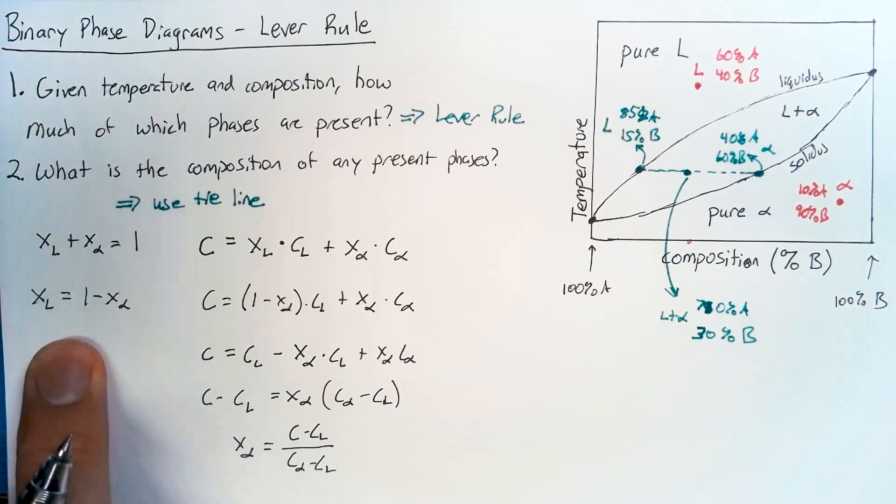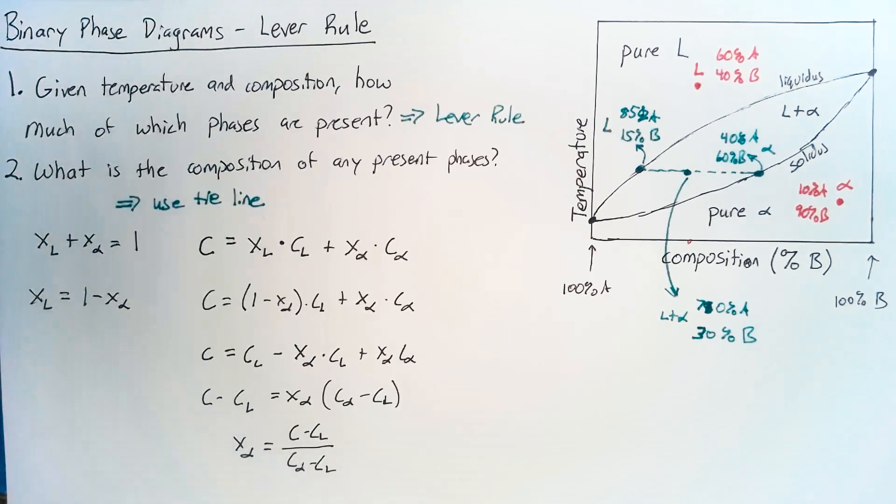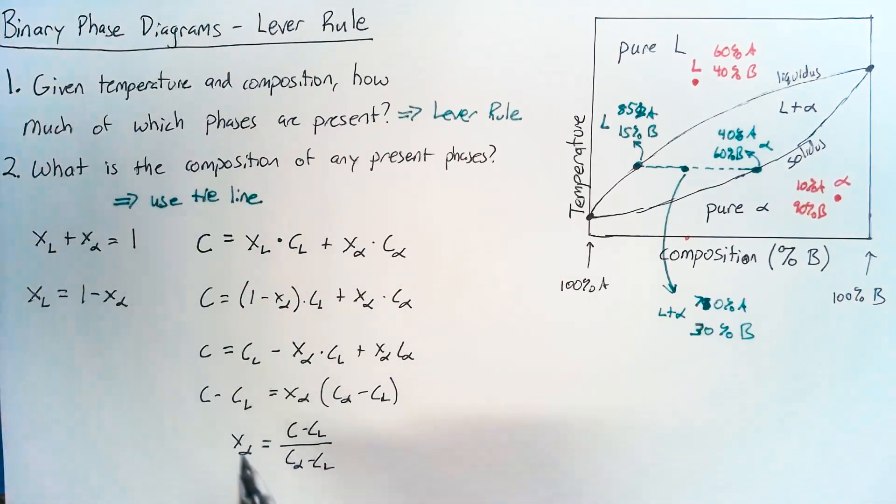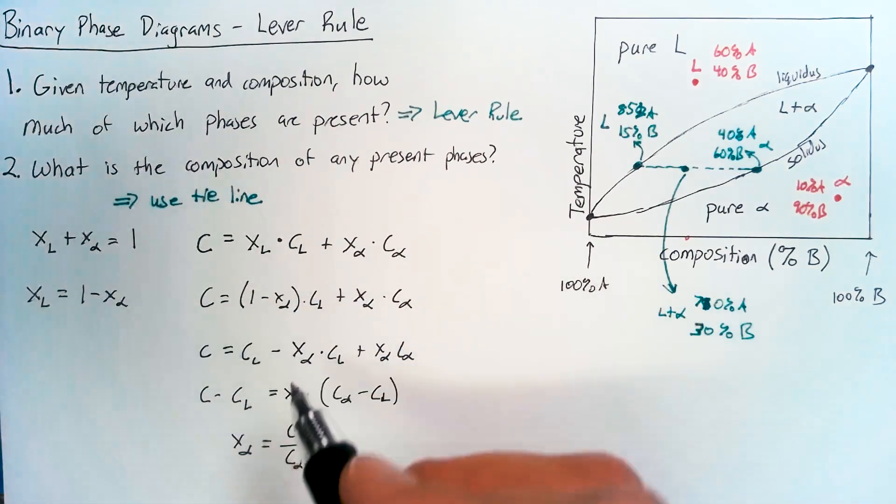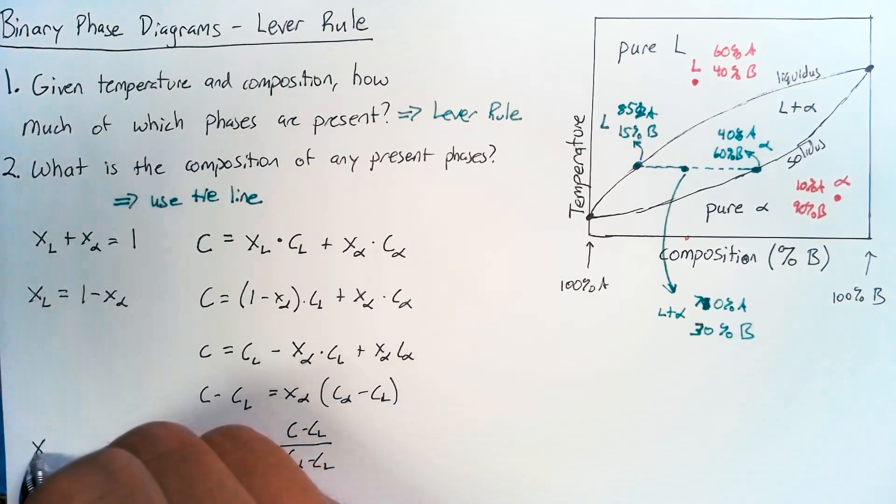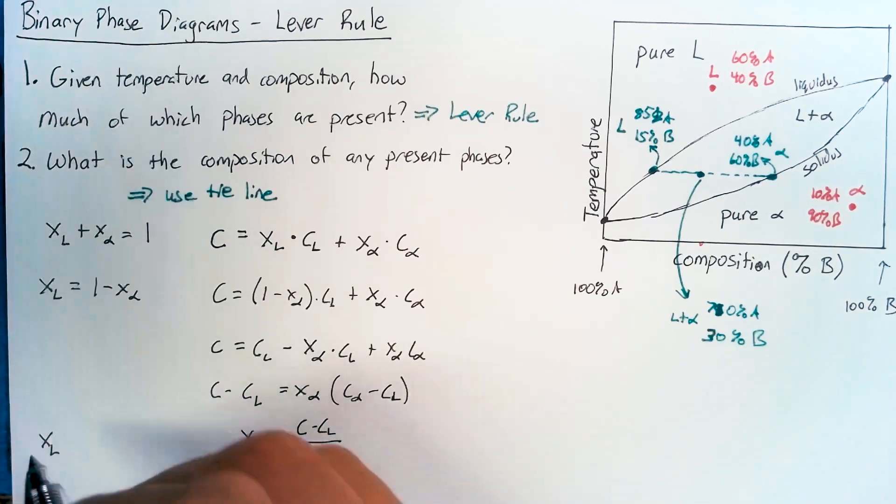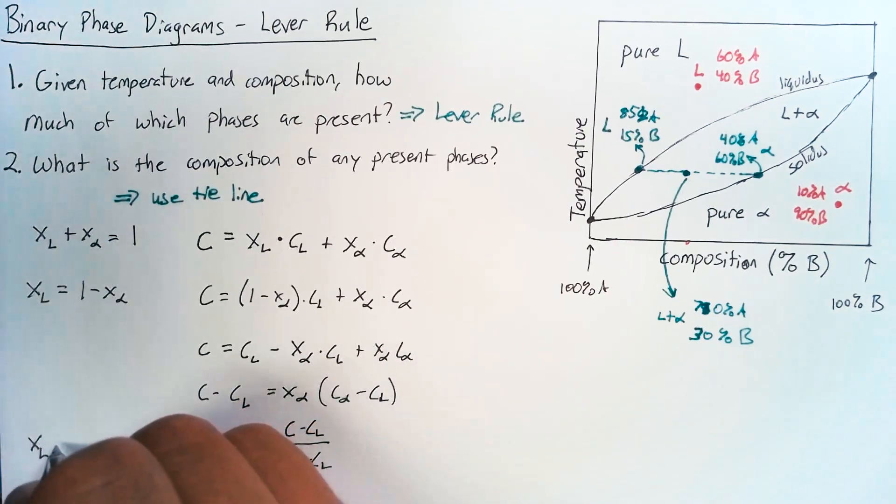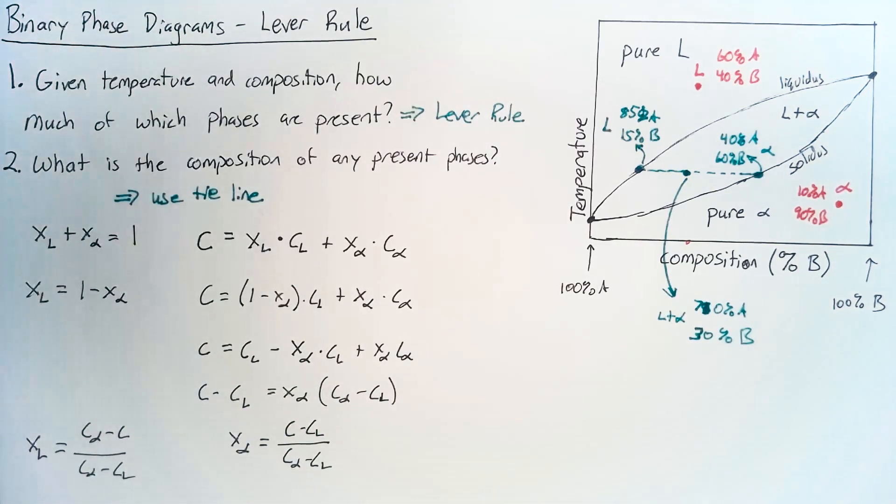Okay. Using the equation over here, we can come up with the percentage of liquid present. And I'm going to skip that work. And we can just say that x_L is equal to C_alpha minus C over C_alpha minus C_L.